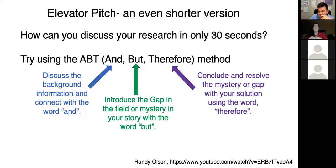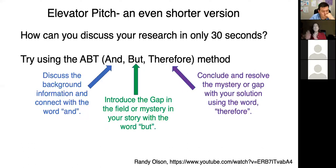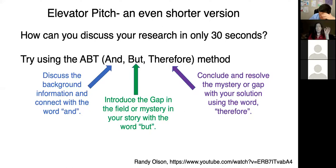I want to introduce a concept called the ABT — the And-But-Therefore method — for distilling your research into a short time. Basically: you discuss background information and more background information and maybe a little more background information, but there's a problem, there's a gap in the field, therefore we're going to do these experiments so we can understand and get past that problem, and once we do the world will be a better place. Give background, identify the tension 'but' moment, then the 'therefore' conclusion of how you'll solve the problem.